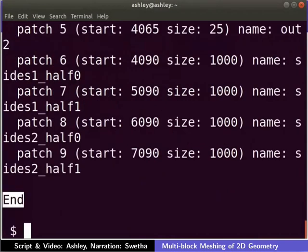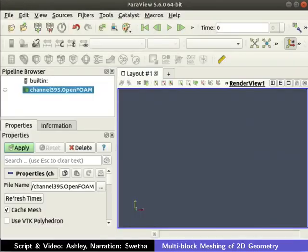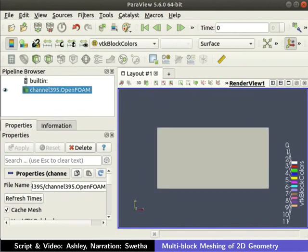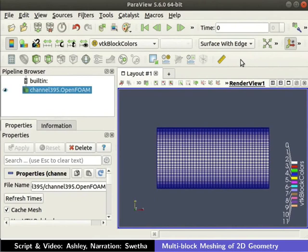To view the mesh in Paraview, type parafoam. Click on apply in the properties tab. Click on surface available in the active variable controls and change it to surface with edges. We can now see the mesh structure in the XY plane. Notice the mesh refinement near the top and bottom faces of the geometry. And now close the Paraview window.